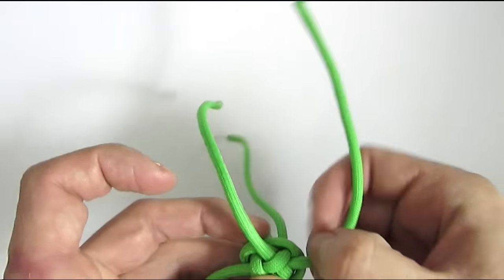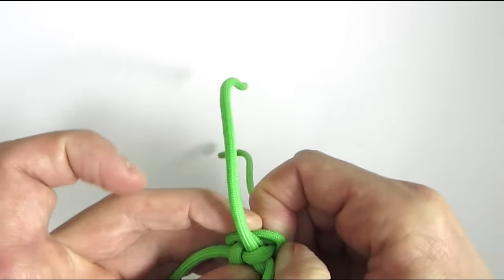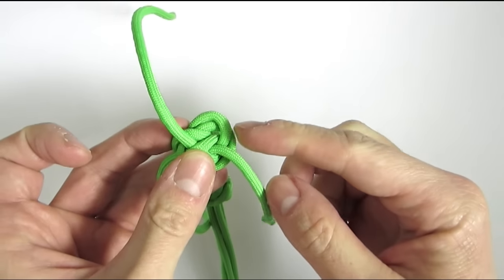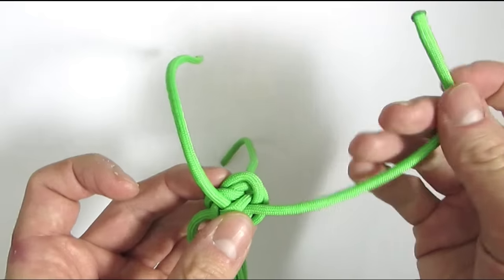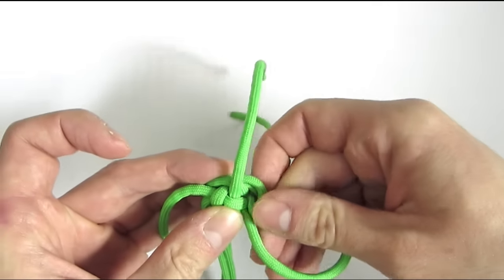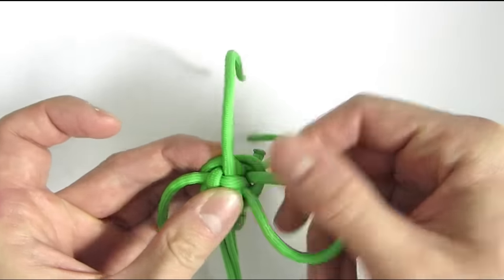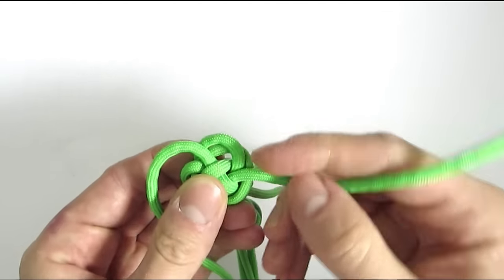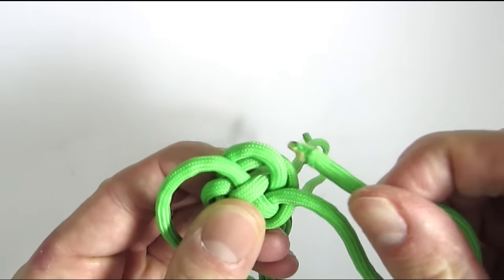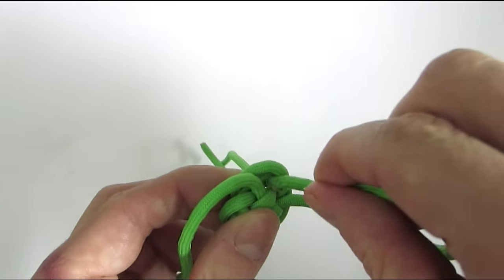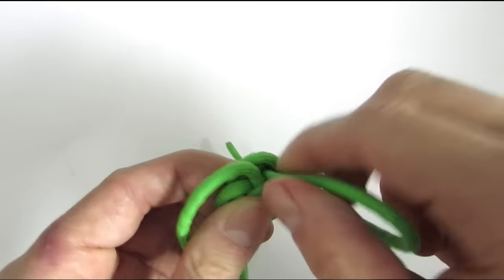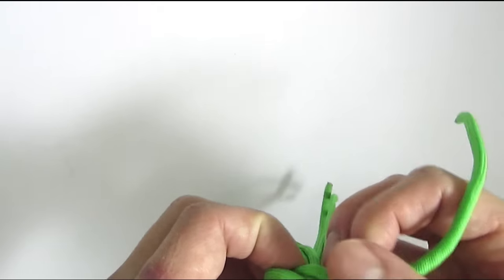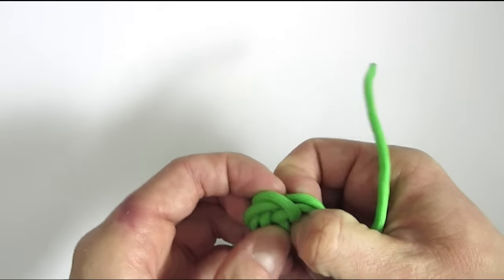We're going to do this with all four cords, so take your next cord, pull out two of the bites that are nearest and then work in your cord. Then the next cord, pull out two bites and feed your cord through. And finally the last two bites and feed your cord through.